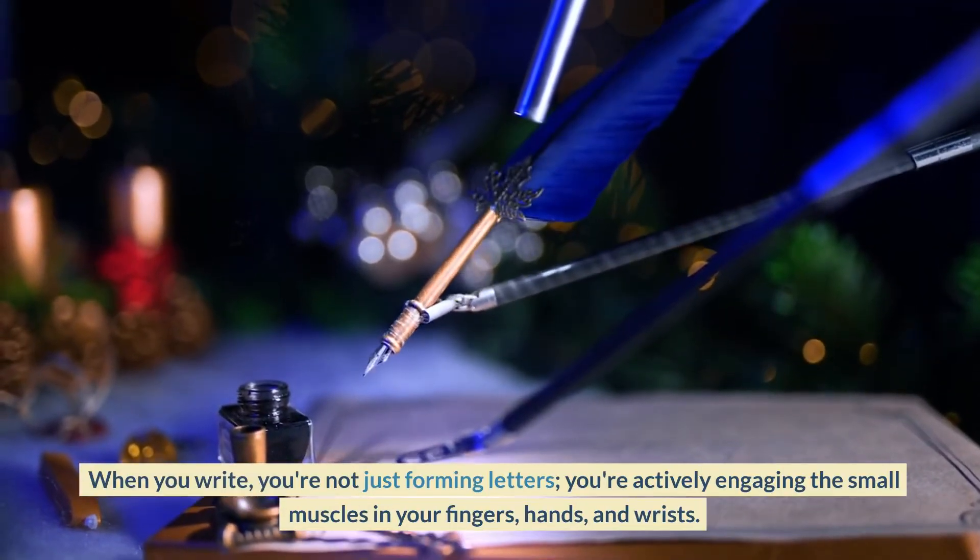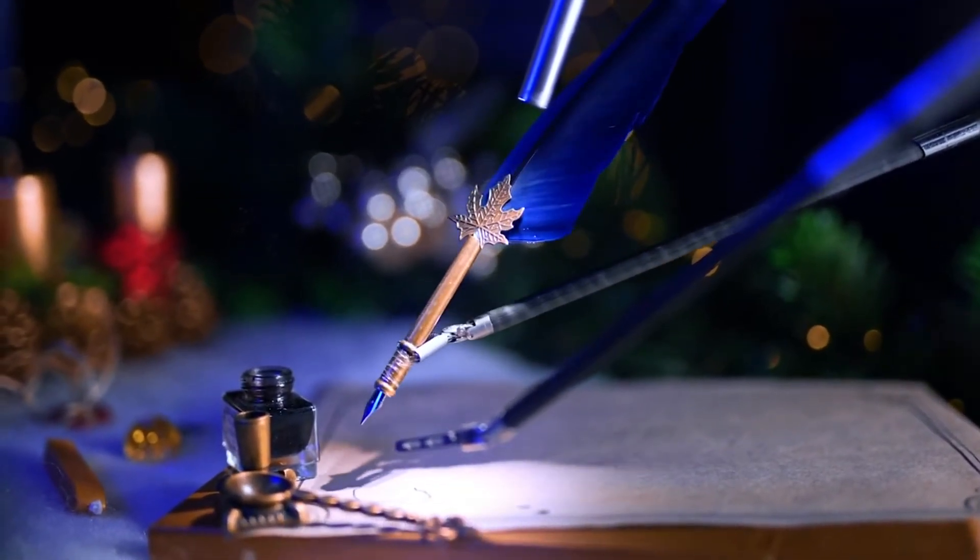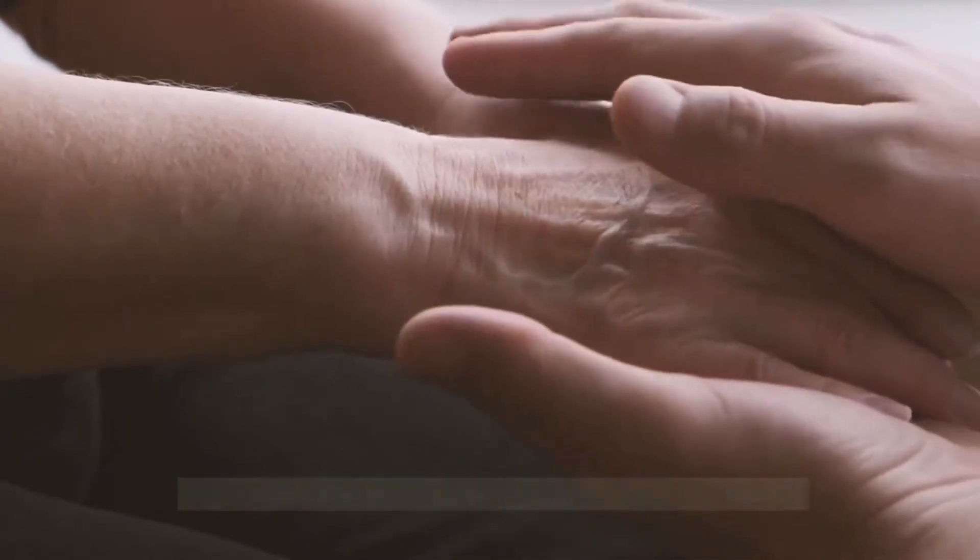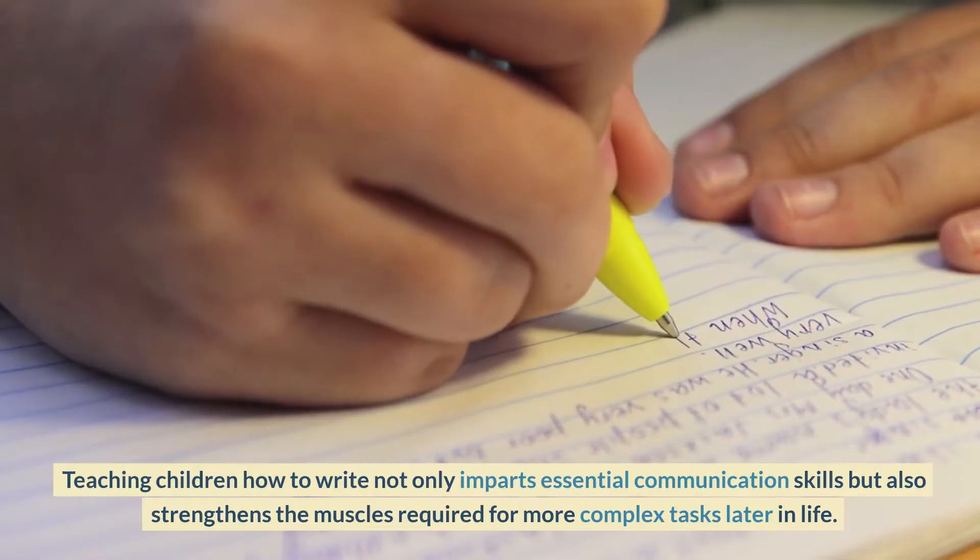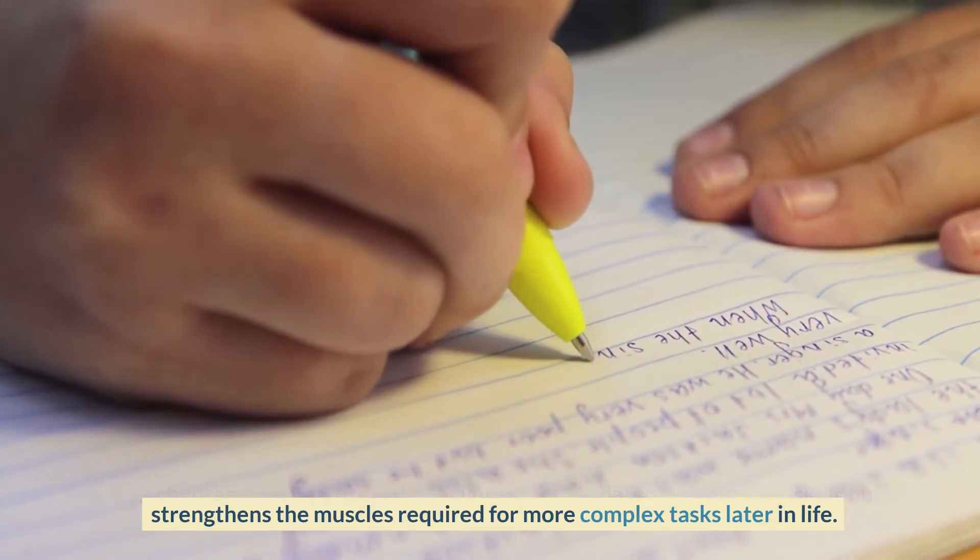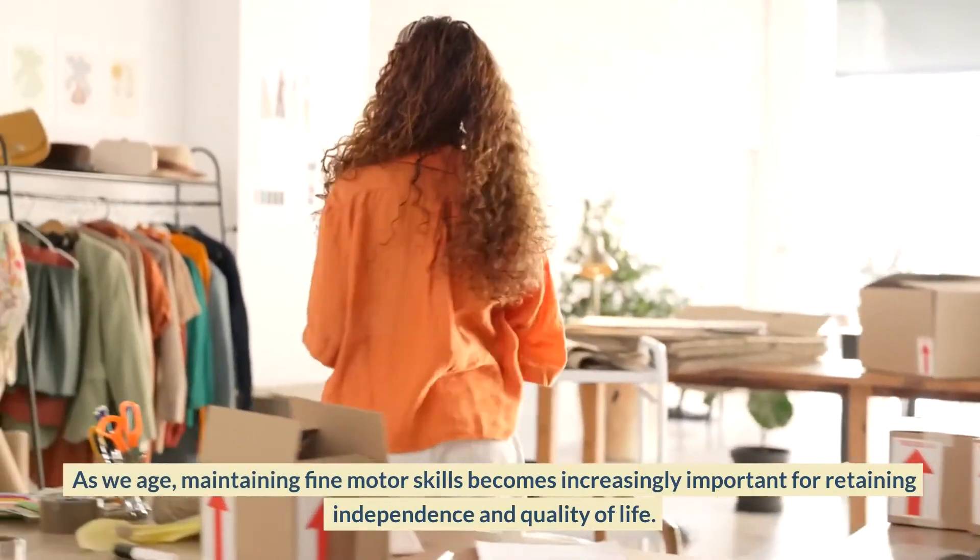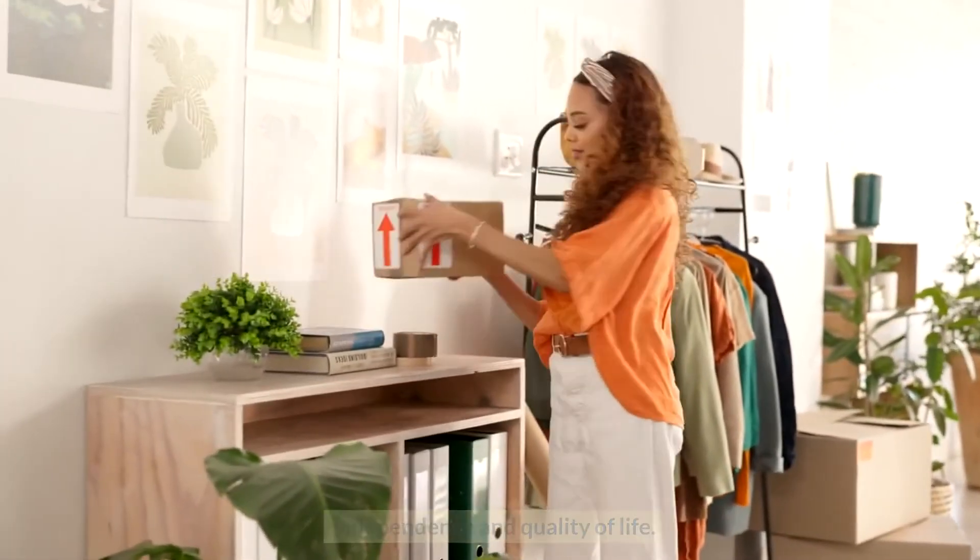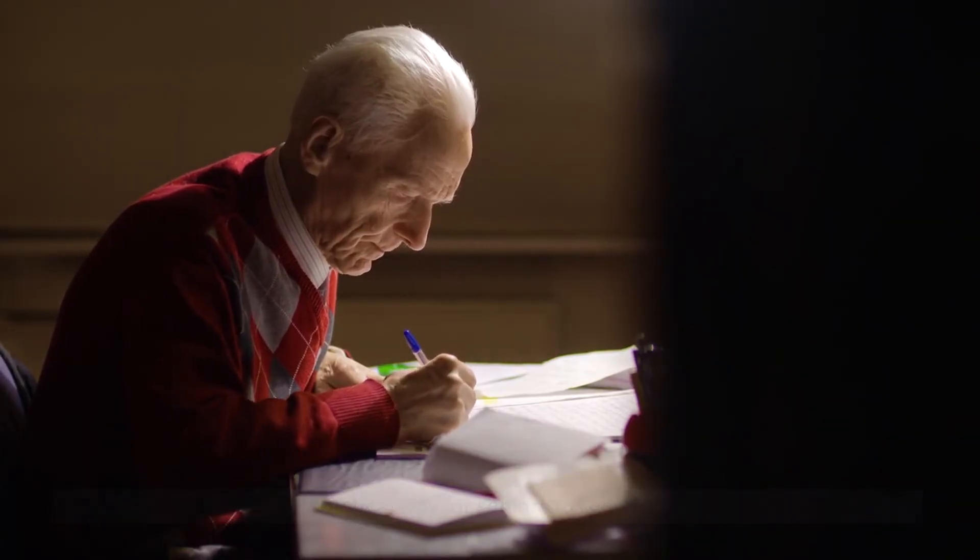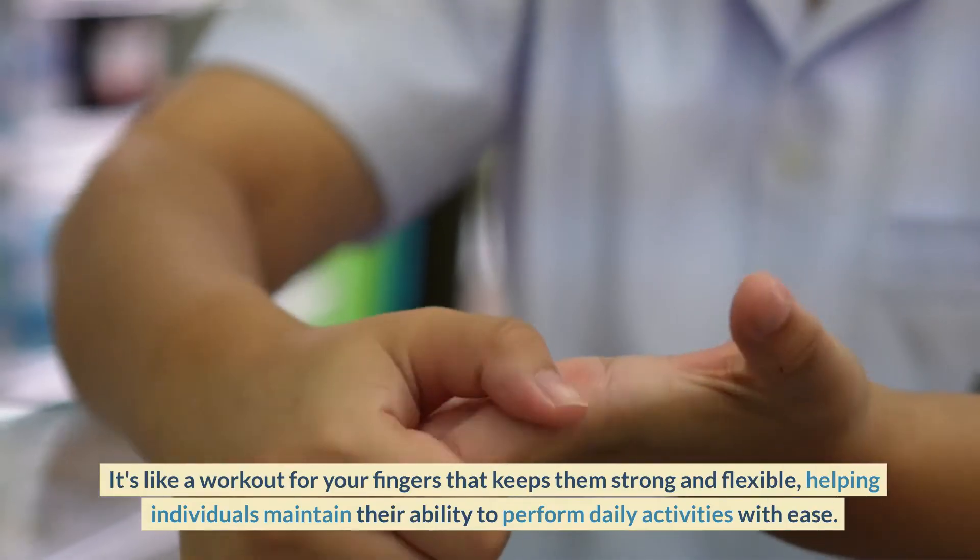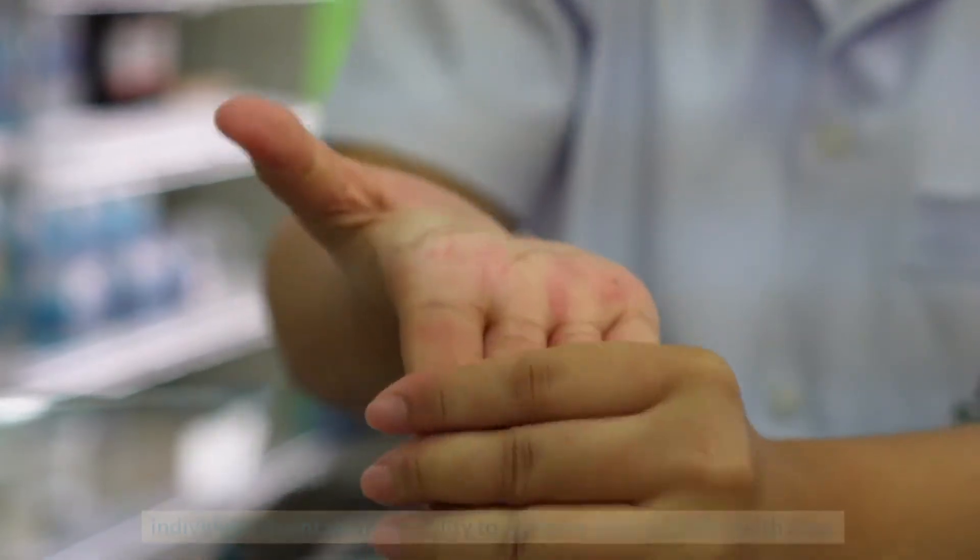When you write, you're not just forming letters. You're actively engaging the small muscles in your fingers, hands, and wrists. This is especially important for young children and the elderly. Teaching children how to write not only imparts essential communication skills but also strengthens the muscles required for more complex tasks later in life. As we age, maintaining fine motor skills becomes increasingly important for retaining independence and quality of life. Handwriting is a fun and practical way for seniors to keep their hands nimble and agile. It's like a workout for your fingers that keeps them strong and flexible, helping individuals maintain their ability to perform daily activities with ease.